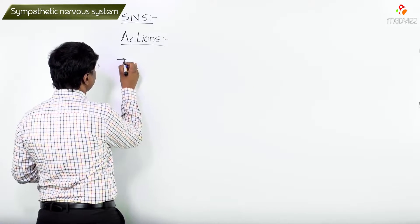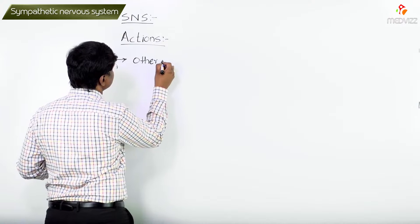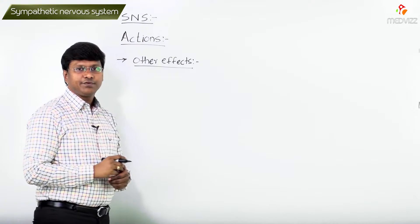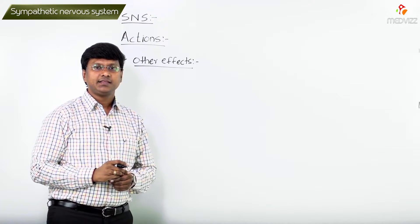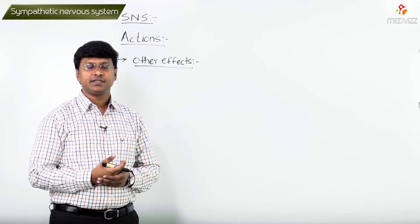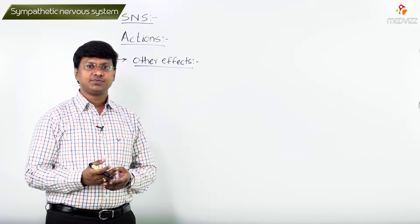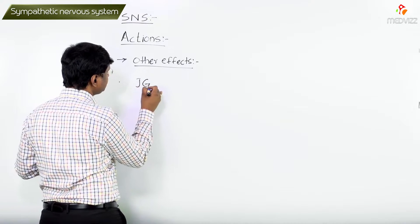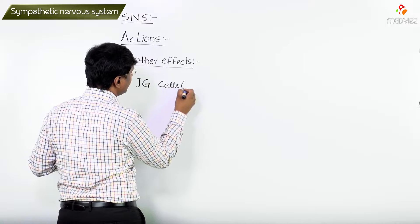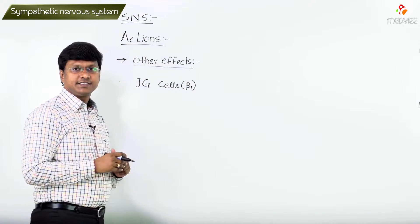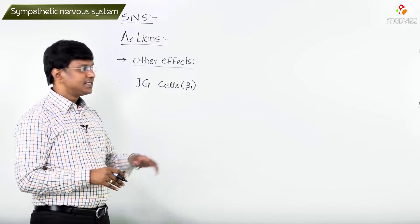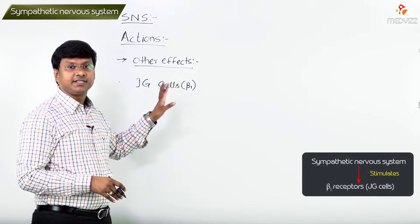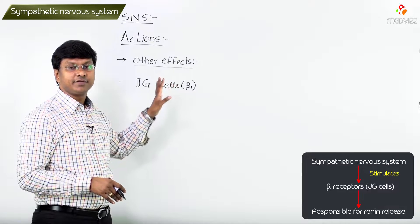Let me tell you some of the other effects of the sympathetic nervous system. In the JG apparatus, within the JG cells, we have the beta-1 receptors. JG cells contain the beta-1 receptors, and if they are stimulated, that is responsible for the release of renin from the JG apparatus.